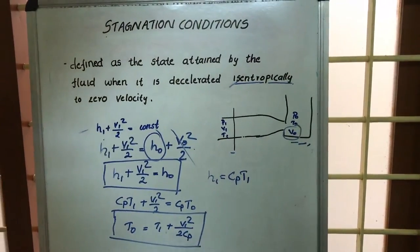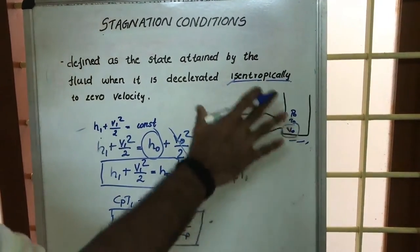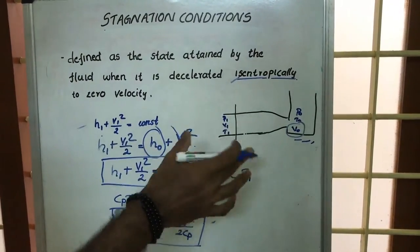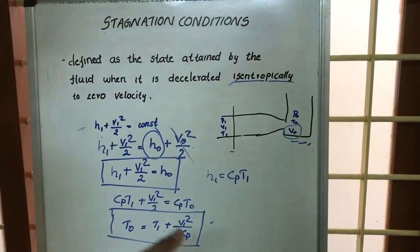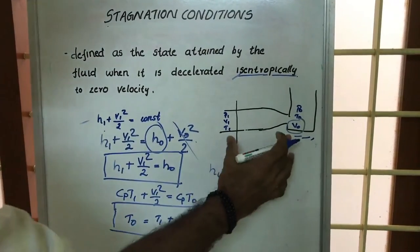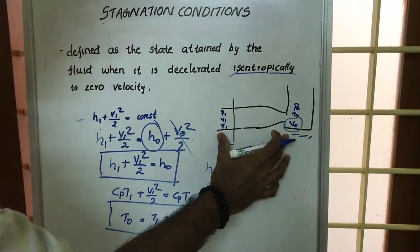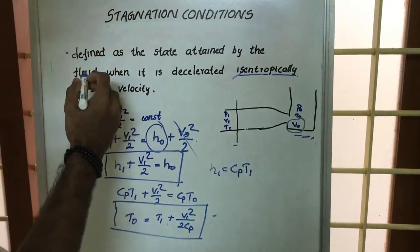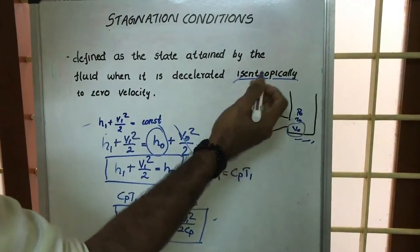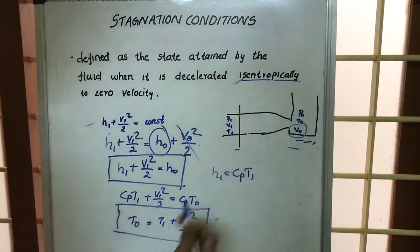So the stagnation condition is a term used for understanding compressible flow. It is the state attained by the fluid when it is decelerated isentropically to zero velocity. Thank you.